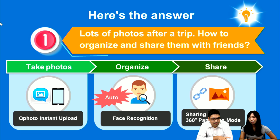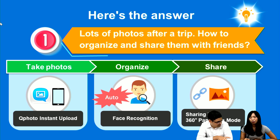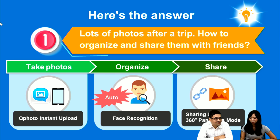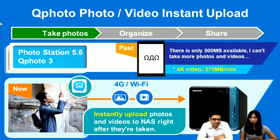I will tell you the first answer. If you have lots of photos after a trip, you can organize and share with friends using QPhoto and Photo Station 5.6 and QTS 4.3.4. The first step: take photos using QPhoto Instant Upload. Next, organizing — you can use face recognition in Photo Station. And the third part, sharing — you can use sharing links and the 360 Panorama mode to view your photos.